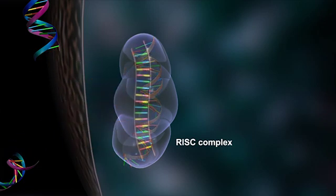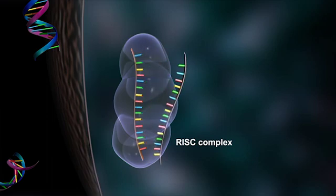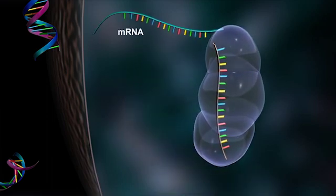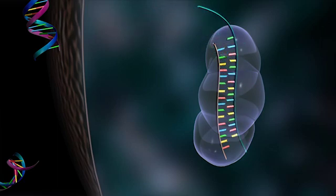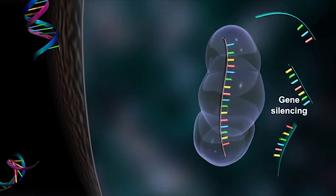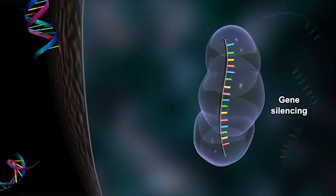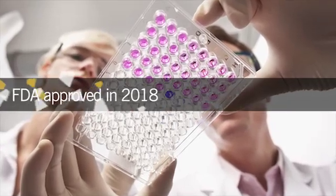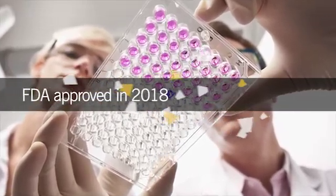With RNA interference, RNA molecules—either microRNA (miRNA) or short interfering RNA (siRNA)—inhibit gene expression by neutralizing targeted mRNA sequences. FDA approved in 2018, the most successful RNA interference therapy is for the treatment of hereditary transthyretin-mediated amyloidosis.